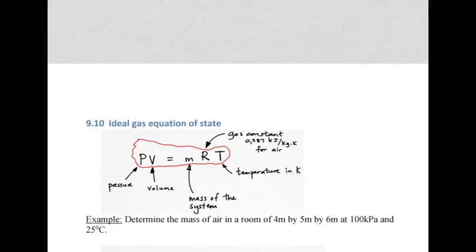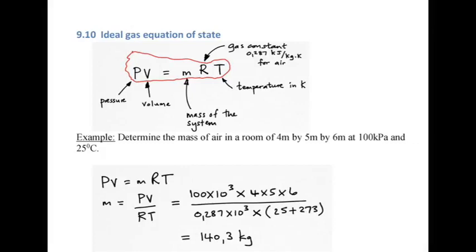This is useful in an example where we must determine the mass of air in a room of 4 by 5 by 6 meters, at a pressure of 100 kilopascals and a temperature of 25 degrees C. Using PV = MRT, making M the subject gives pressure times volume over R times T. Pressure is 100 kilopascals, volume is 4 × 5 × 6, R is 0.287 × 10³ for air, and temperature is 25 + 273 = 298 Kelvin. This solves to 140.3 kilograms of air in that room.